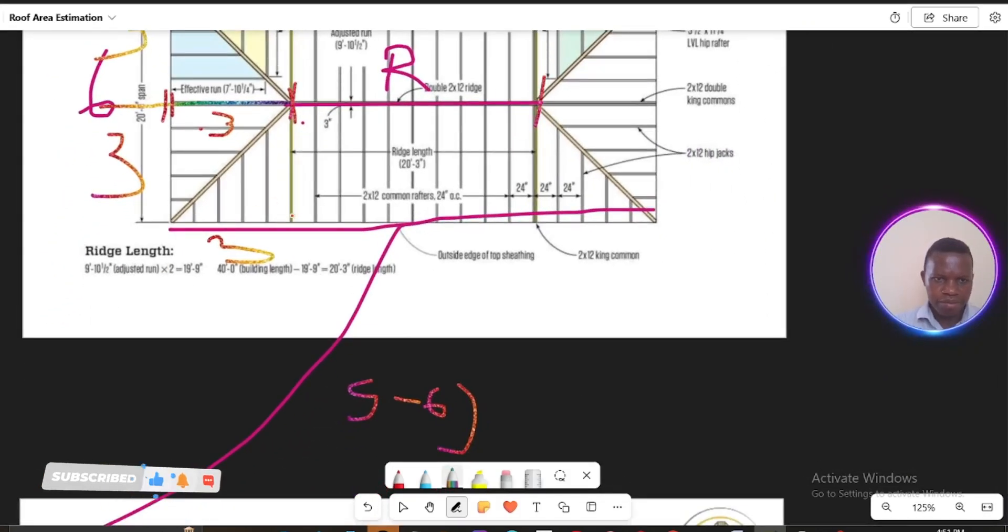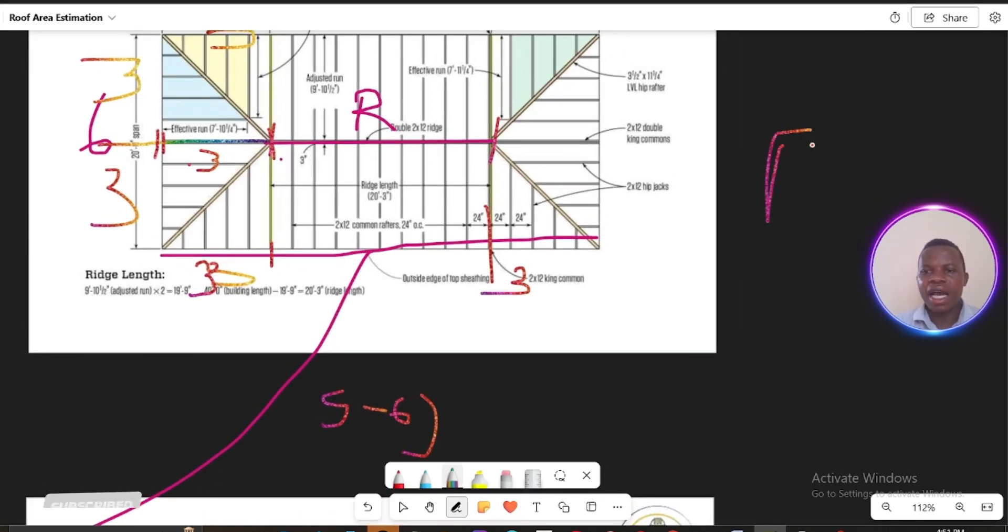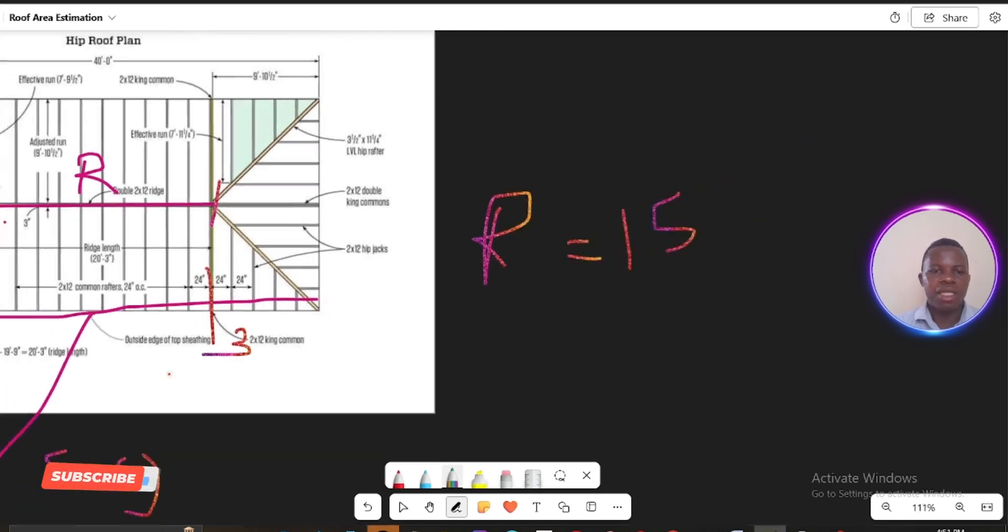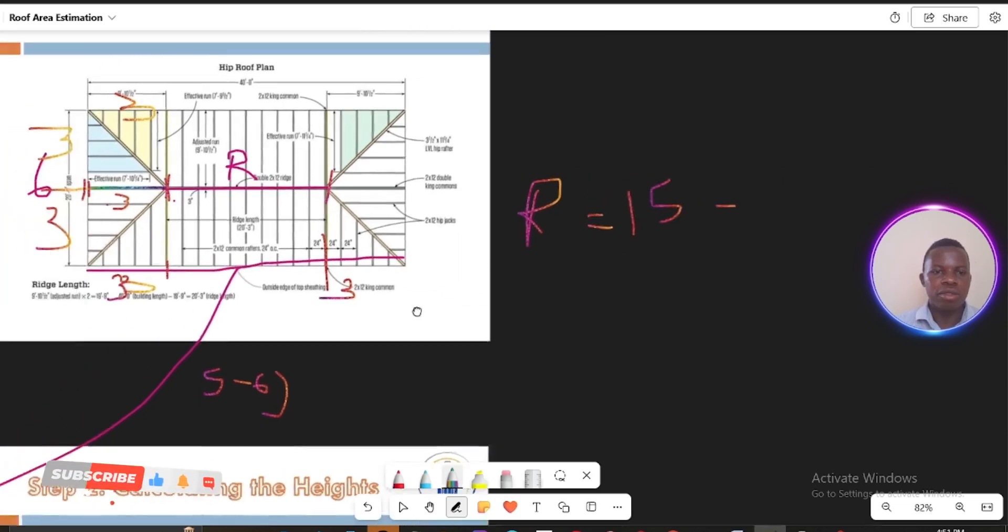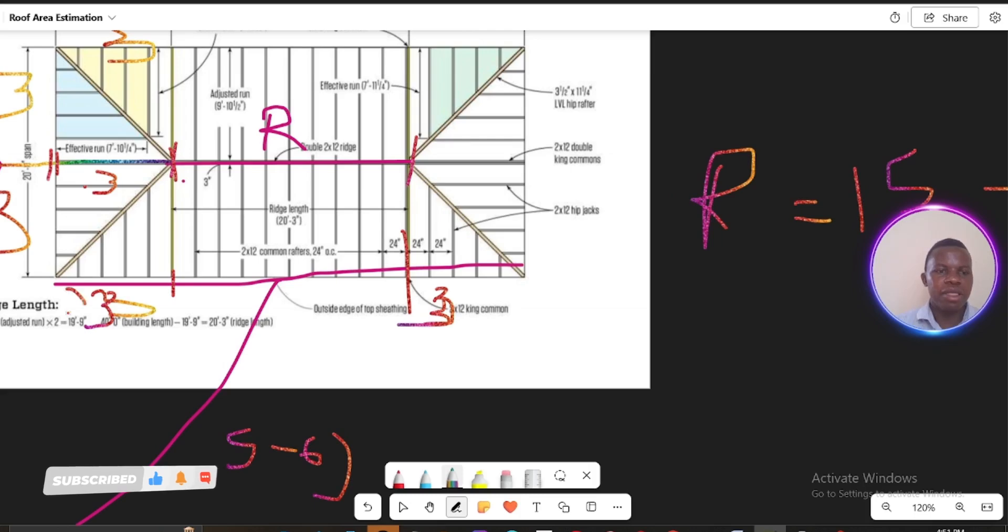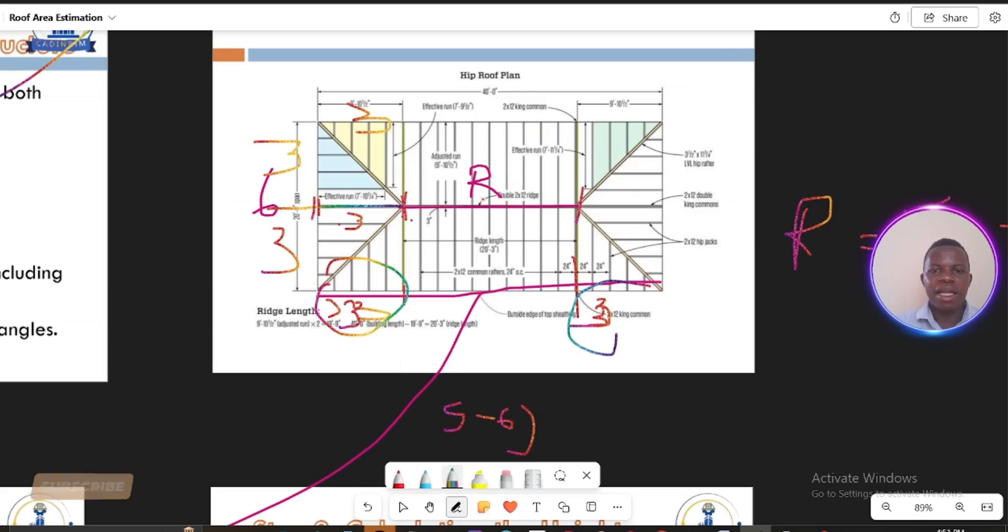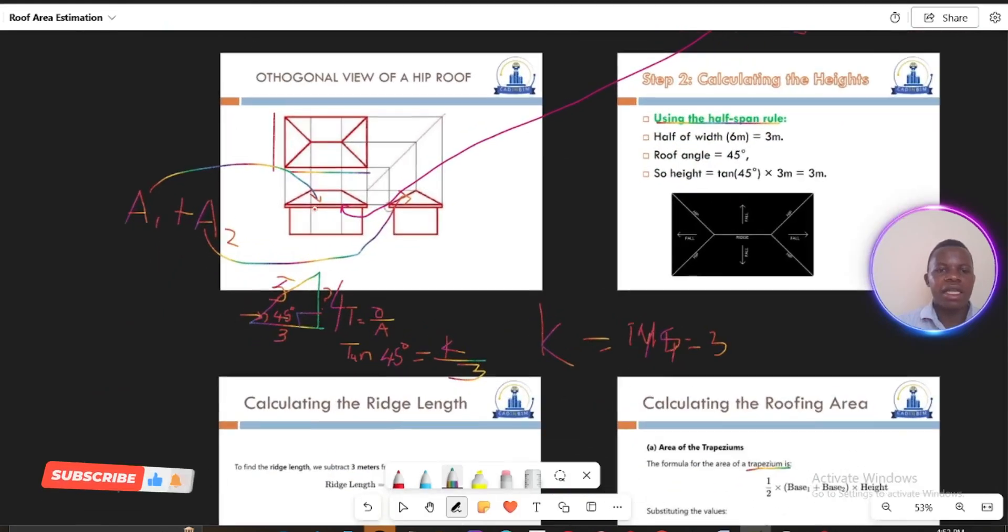Now that this one will be 3 meters and also this one here will be 3 meters. So to calculate the length of our ridge, it will be the total length, which is 15, I mean the total length of this span here, and we subtract by these two, the right side here and this length here, which is 6. So just 15 minus 6, which will be 9. So we'll be having here our length of our ridge as 9. Now that we have our dimensions, let's come back to our calculation here.